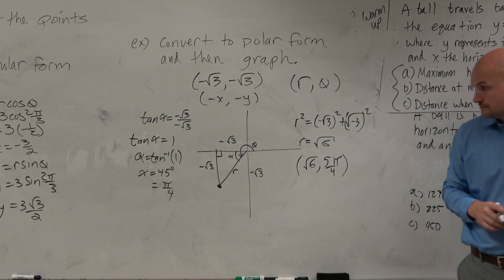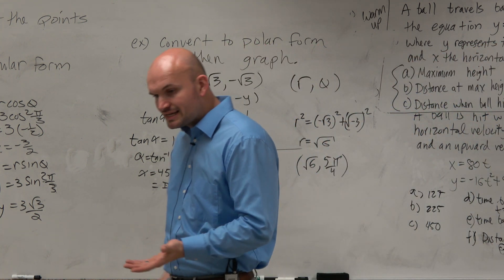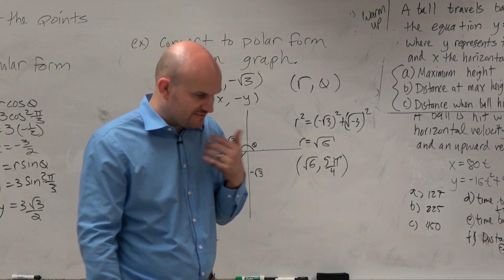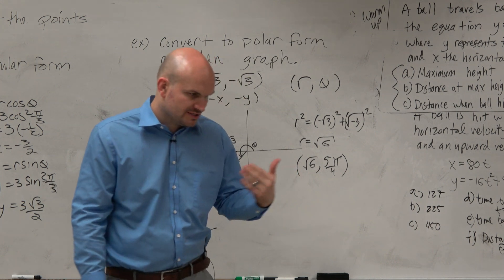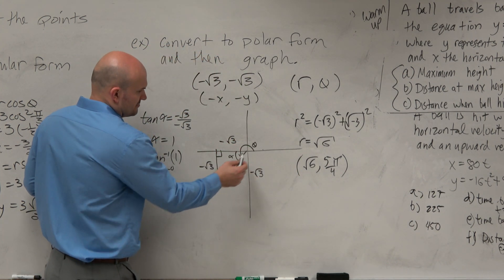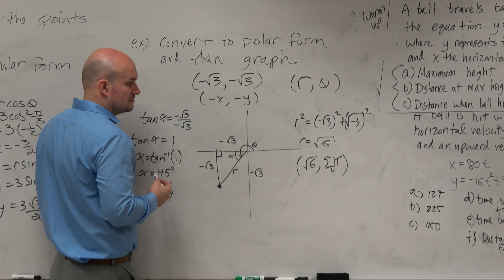Hold on. Now, the square root of 6 is, let's see here. The square root of 9 is 3. The square root of 4 is 2. So it's going to be somewhere between 2 and 3. Right? So you guys had a question?